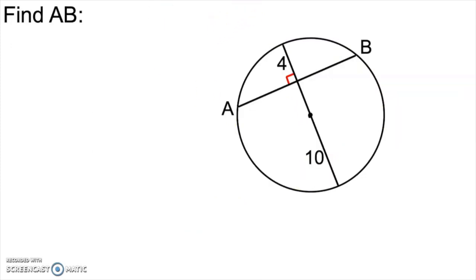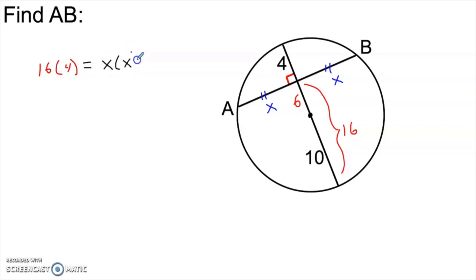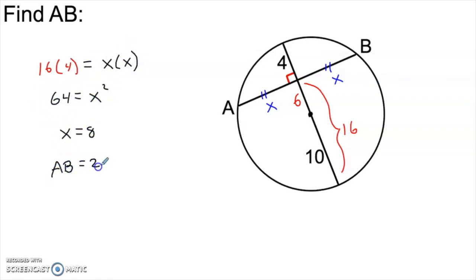Here's another example of the same idea. We have a chord perpendicular to this diameter, which means the two segments are congruent — let's call them both x. This piece is 4 and this piece is 10. Since this is a radius, the other radius is 10 as well, which means the missing chunk of the diameter is 6. You can add a radius and use Pythag, or treat this as intersecting chords. The segment of the diameter on one side is 16 (that's 4 + 6 = 10... actually 10 + 6 = 16). The product gives 64 = x², so x = 8. AB = 2x = 16.